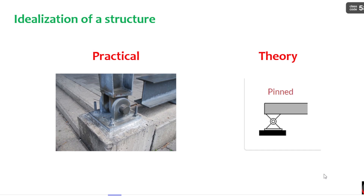The main important aspect of civil engineering is you have to relate the practical and theoretical aspects. For example, if you observe any support practically, you have to relate it to the theory — whether it is a fixed support or a pin support. Whenever you succeed in converting from practical to theory or vice versa, you become a very good civil engineer. The main aim of this series is to bridge the gap between practical and theoretical aspects of civil engineering.